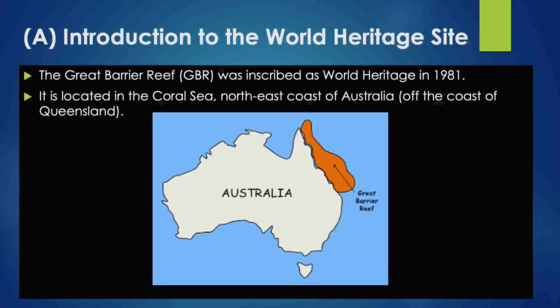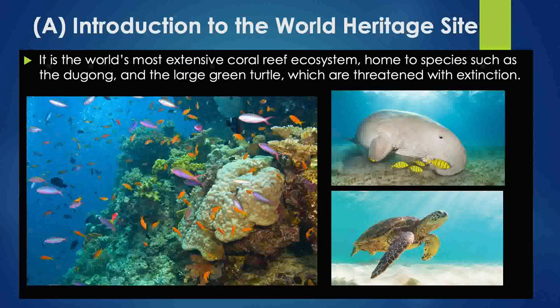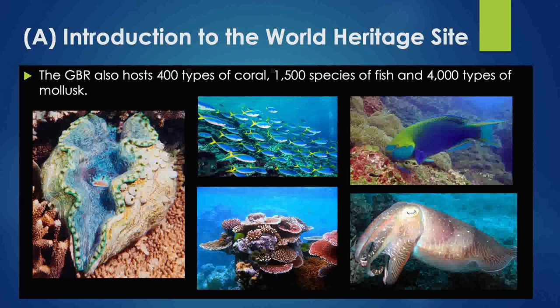The Great Barrier Reef was inscribed as World Heritage in 1981. It is located on the north-east coast of Australia. It is the world's most extensive marine reef ecosystem, home to species such as the river and the large sea turtles which are threatened. The Great Barrier Reef also hosts 41,500 species of fish and large sea turtles.